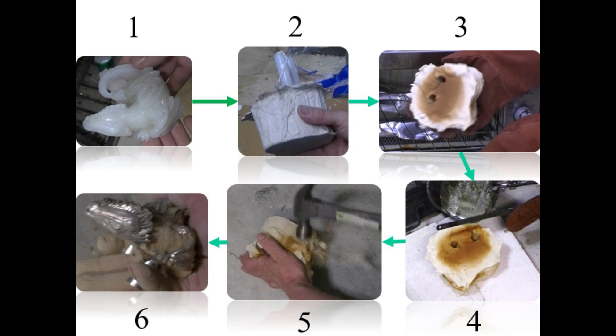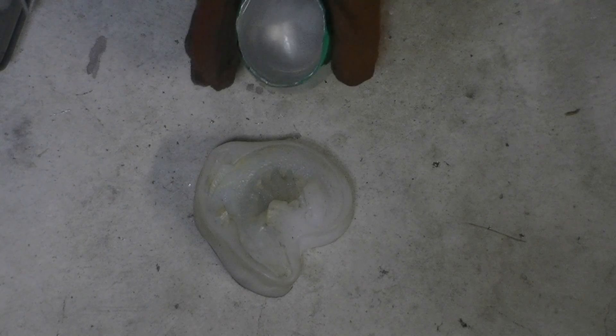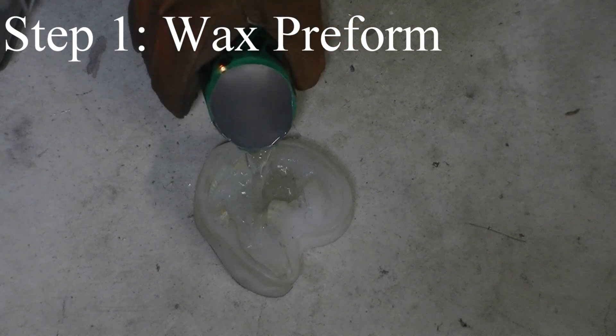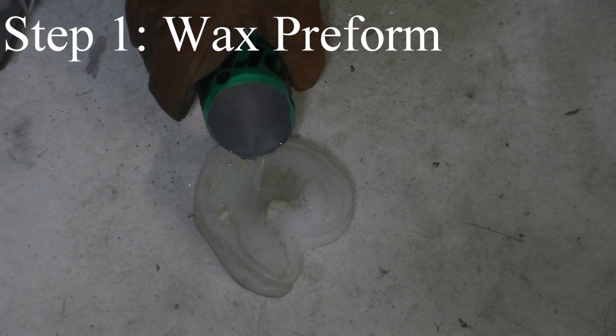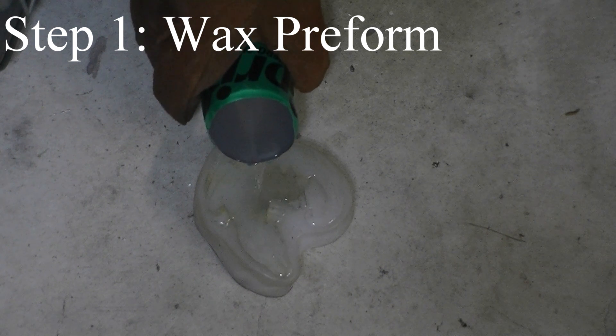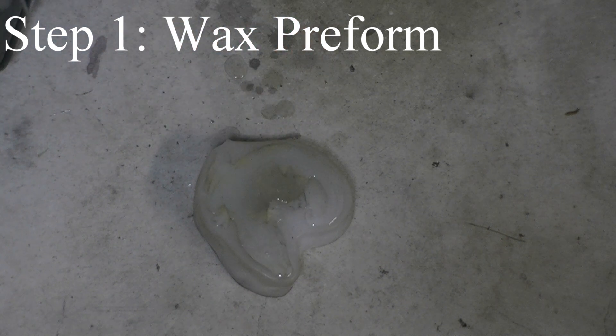The lost wax casting process is based on a series of steps. Firstly, a wax positive is made. This has runners and risers connected to channel the flow of molten metal. This wax preform is covered in a ceramic.